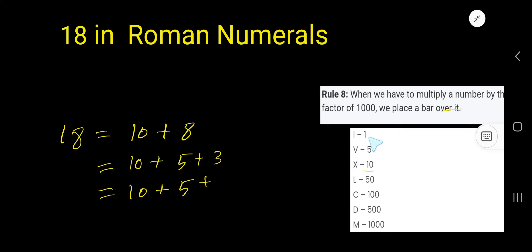We can write 3 as 1 plus 1 plus 1, because 1 has an equivalent in Roman letters. Now replace 10 with X, 5 with V, and 1 with I.